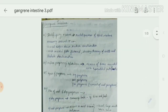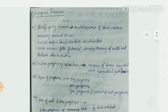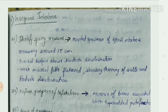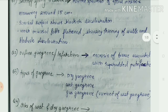First is identification. This is a moist specimen of small intestine measuring around 15 centimeters. The serosal surface shows blackish discoloration. The inner mucosal folds are flat and showing thinning of the walls and blackish discoloration.